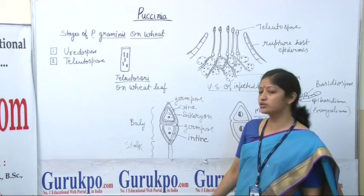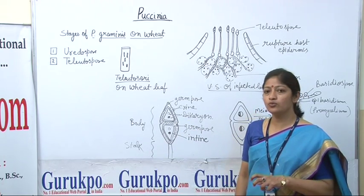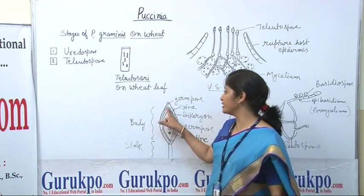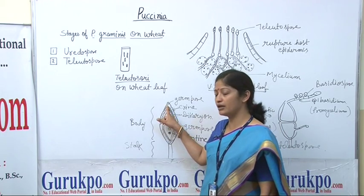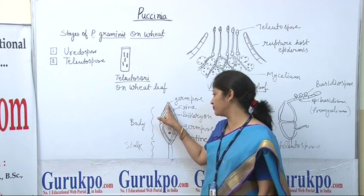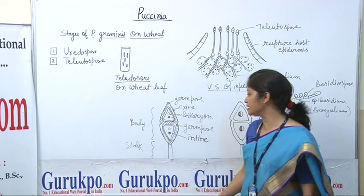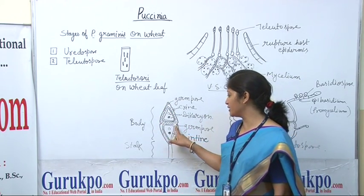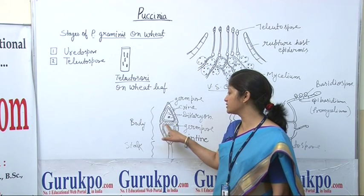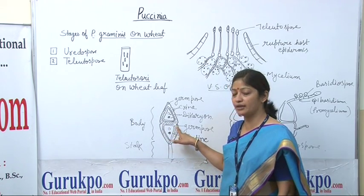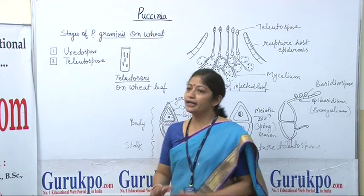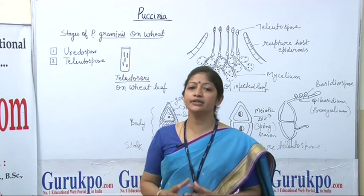It shows two germ pores — one in the upper cell at the tip, and the second germ pore appears next to the septa.